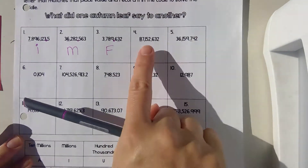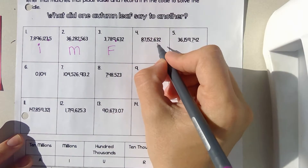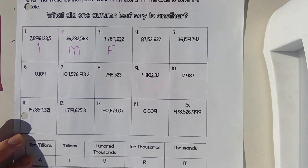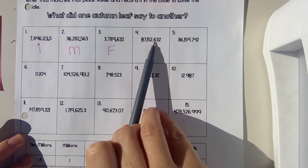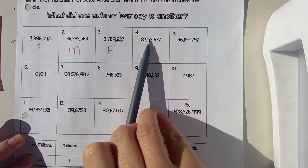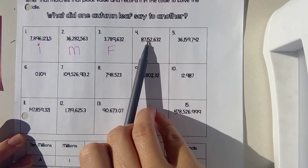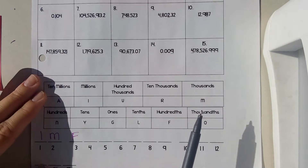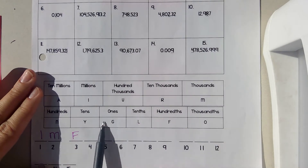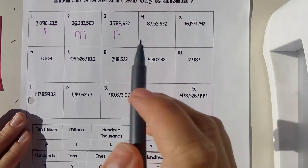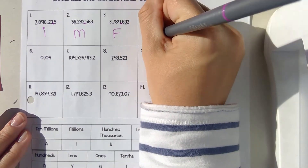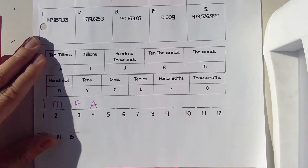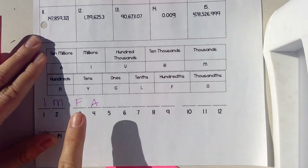Number four. I actually don't have a decimal in this one. So this is ones, tens, hundreds, thousands, ten thousands, hundred thousands, millions, ten millions. So ten millions is an A. I put an A down here.